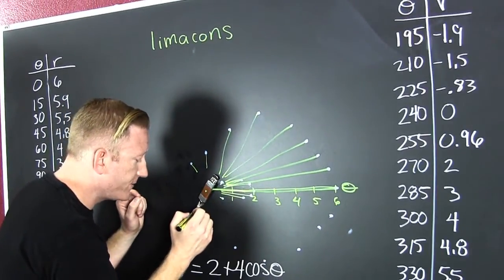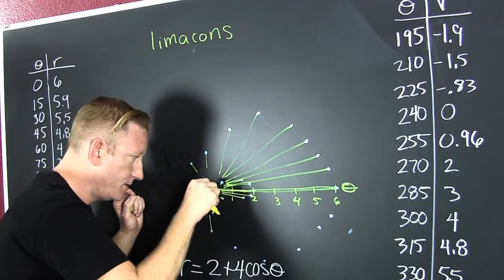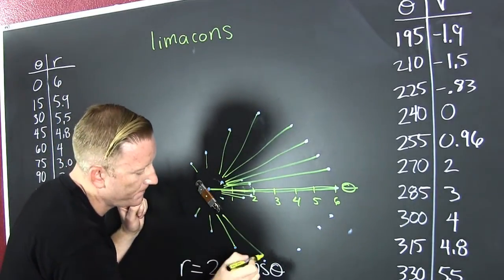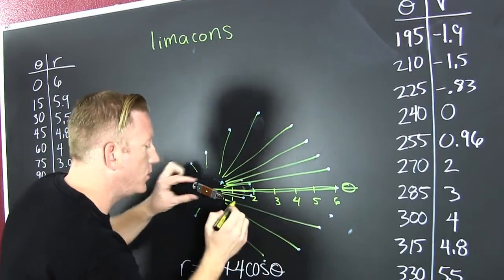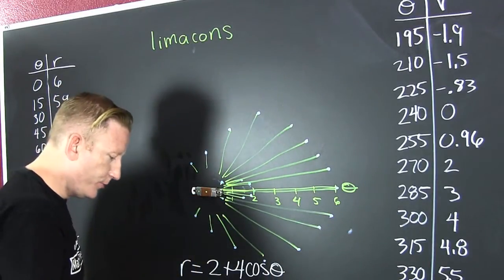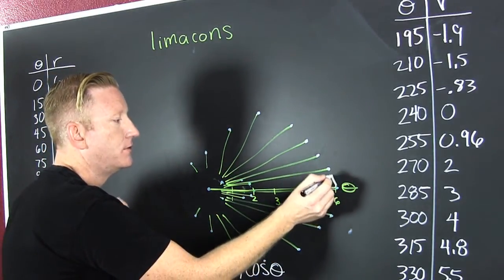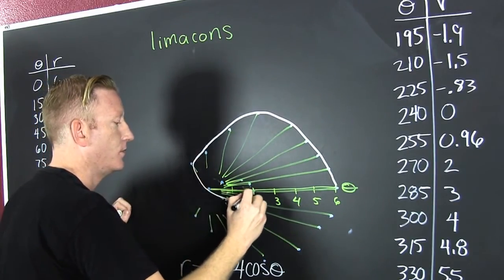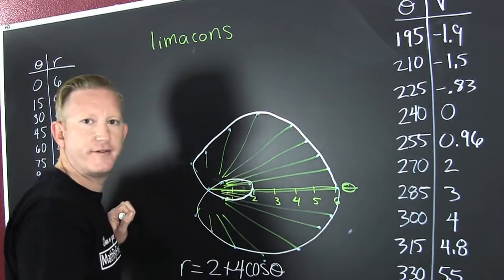And then our r starts to go positive — over there now. Please don't scratch the board, it's expensive. And if we put that all together, it's our first limaçon.